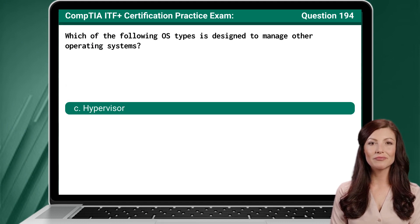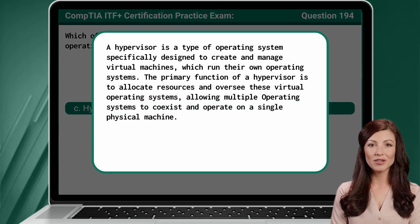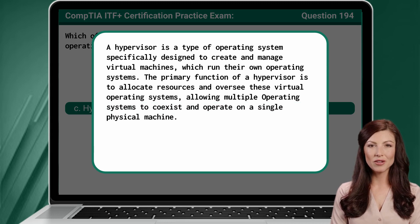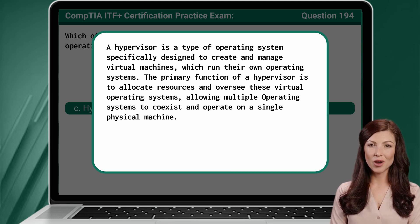The answer is C: Hypervisor. A hypervisor is a type of operating system specifically designed to create and manage virtual machines, which run their own operating systems. The primary function of a hypervisor is to allocate resources and oversee these virtual operating systems, allowing multiple operating systems to coexist and operate on a single physical machine.